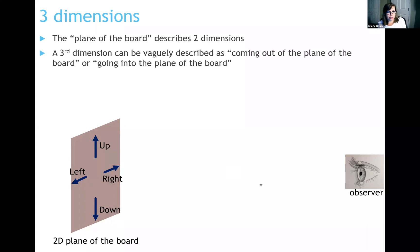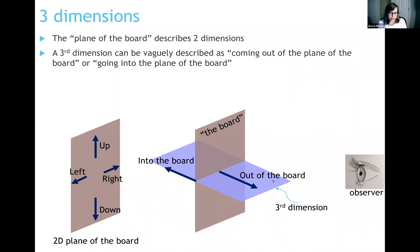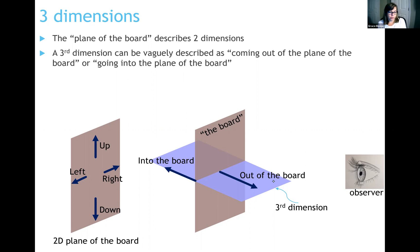If we add a third dimension to this picture, the third dimension comes out of the board or goes into the board. Just like up and down describe the vertical dimension and left and right describe the horizontal dimension, the phrases 'out of the board' and 'into the board' describe this third dimension. Imagine an arrow coming out of your computer screen pointing at your face — that is out of the board. An arrow shooting into your computer screen is into the board.